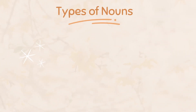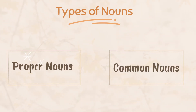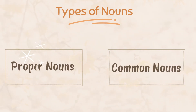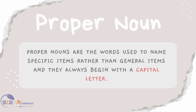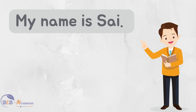Now let us learn about the second type of noun classification. Nouns can be divided into proper nouns and common nouns. Proper nouns are words used to name specific items rather than general items and they always begin with a capital letter. For example, in the sentence 'My name is Sai,' the word Sai is a noun because it is a naming word. Moreover, Sai is a name of a particular or specific person. That is why Sai is an example of a proper noun — observe that I have used a capital S for Sai because it is a proper noun.